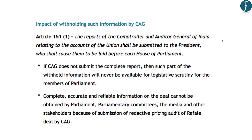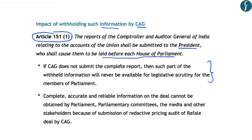Under Article 151 of the Indian Constitution, the CAG submits reports to the President, who causes them to be laid before each house of Parliament. If the CAG does not submit a complete report, the withheld information will never be available for legislative scrutiny by Members of Parliament — which is at the base of our democratic system. As complete information has not been provided to Parliament, it is also not available to parliamentary committees and media.